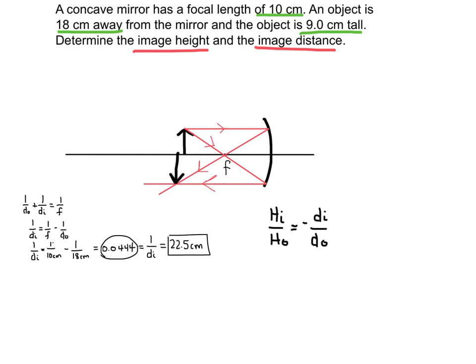So here is my equation to solve for the height of the image. So really I just need to multiply both sides by the height of the object. So I'm going to rearrange this. And I end up with this.